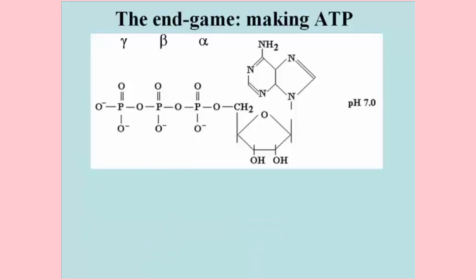The end game of glycolysis and in fact of respiration is to get free energy out of glucose and into ATP. Here's a drawing of the ATP molecule as it would exist at about pH 7, where it is most of the time in cells.